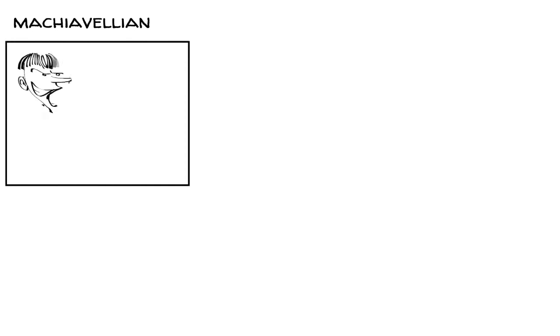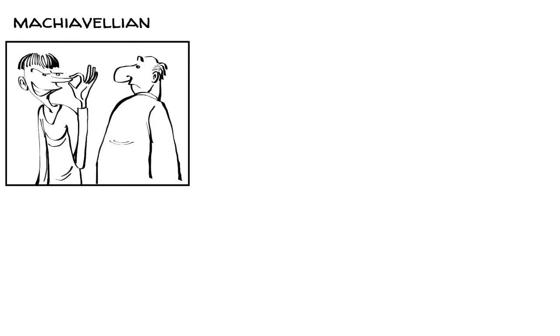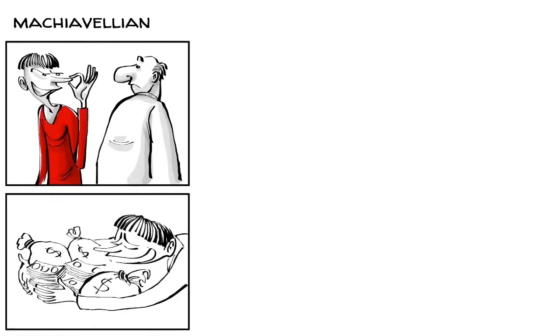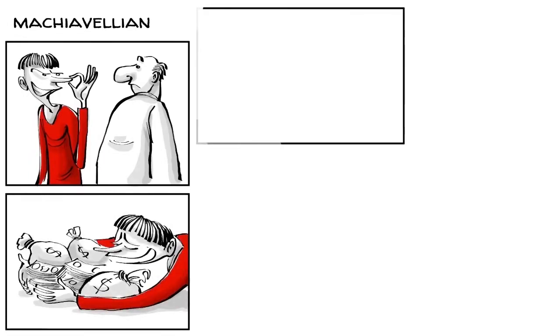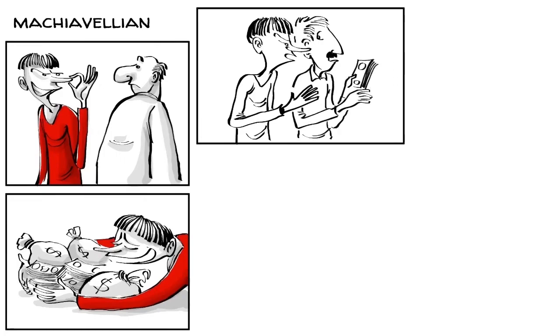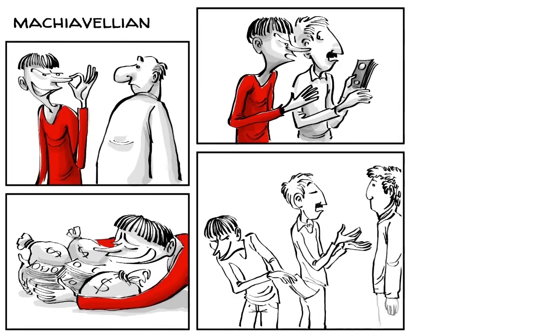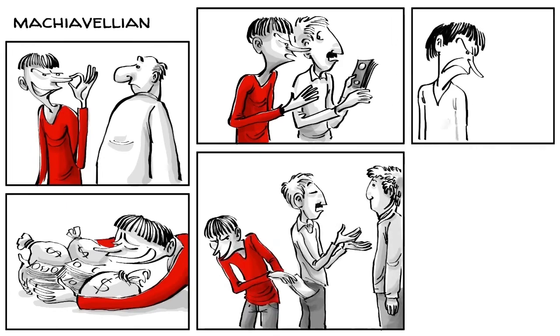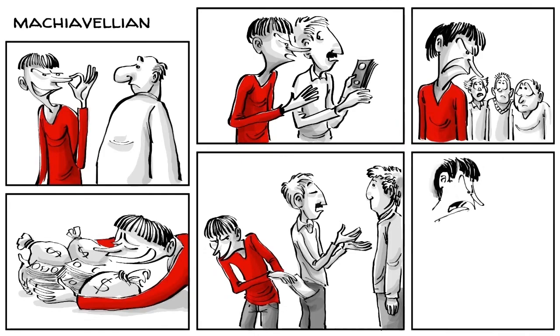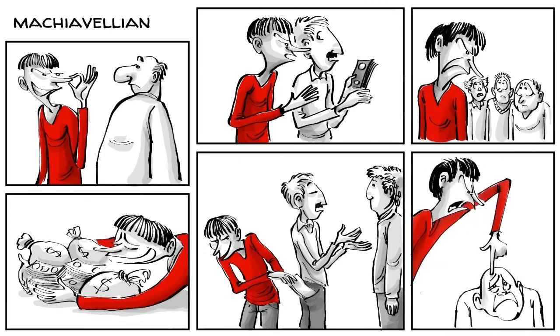Machiavellians are unprincipled, cold and have a cynical view of other human beings. They like money, power and winning and they use manipulation to get what they want or exploit others. If manipulation doesn't work, they steal or betray. Those high on the spectrum believe it's better to be feared than being liked and offend others as a strategy to control them.